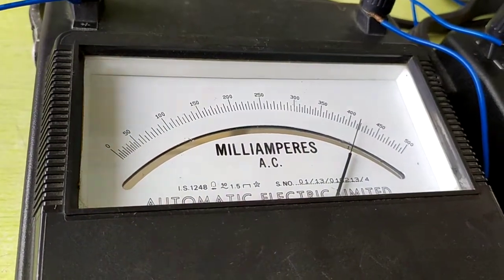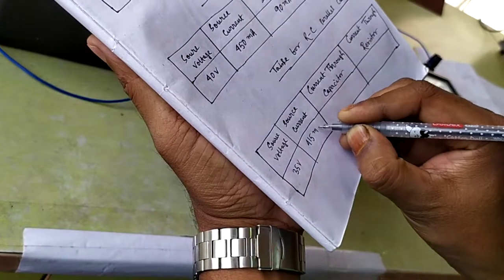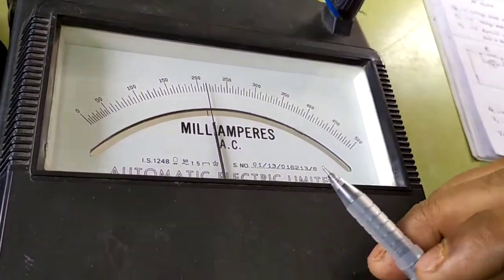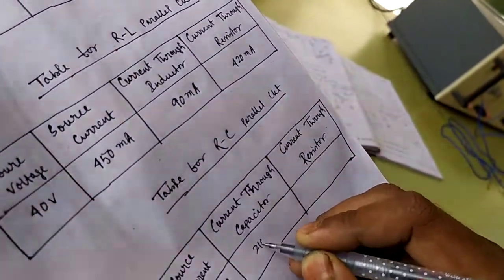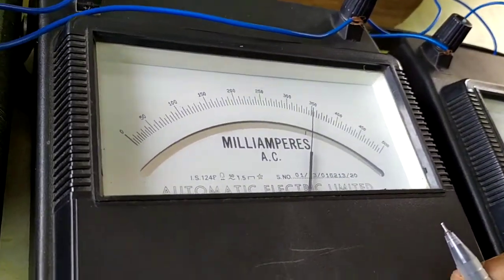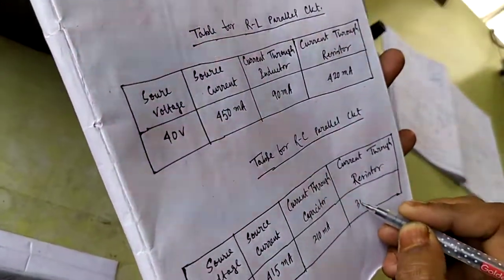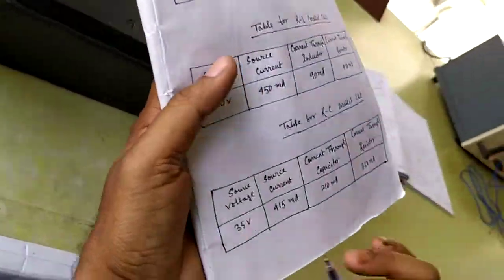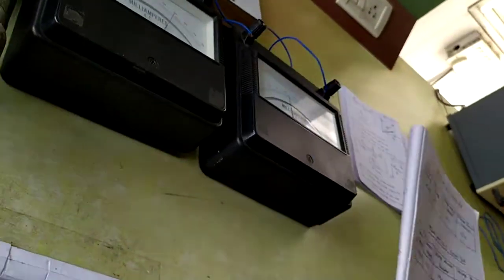Current through the capacitor is approximately 210 milliamperes, and current through the resistor is approximately 350 milliamperes. These are the readings for the RC parallel circuit.